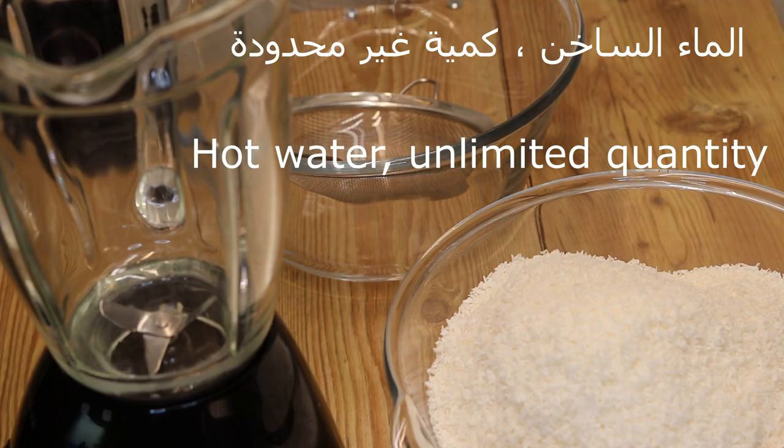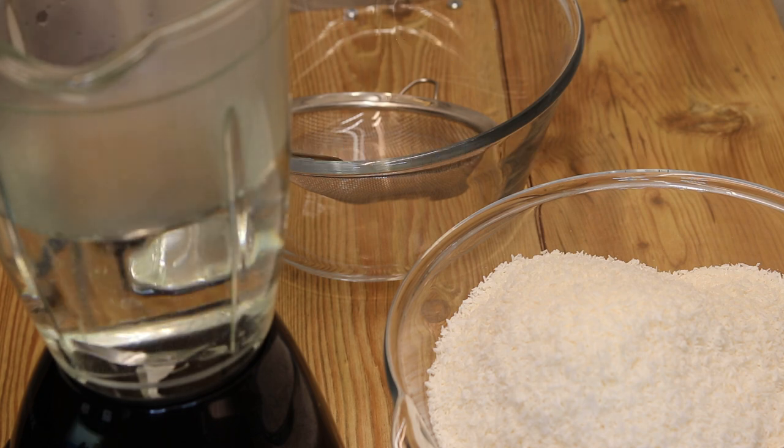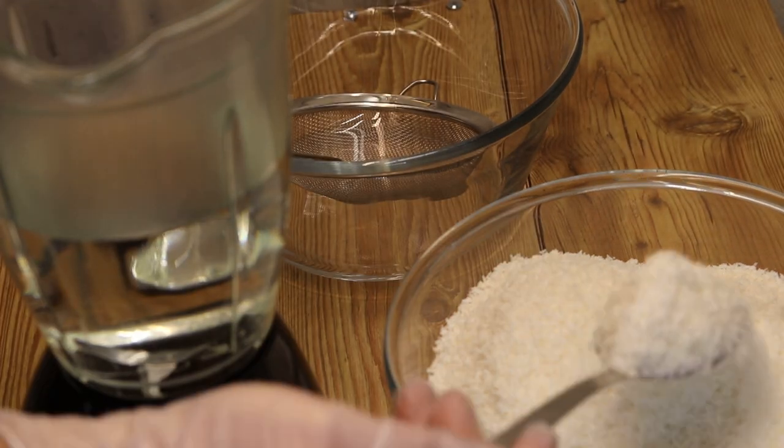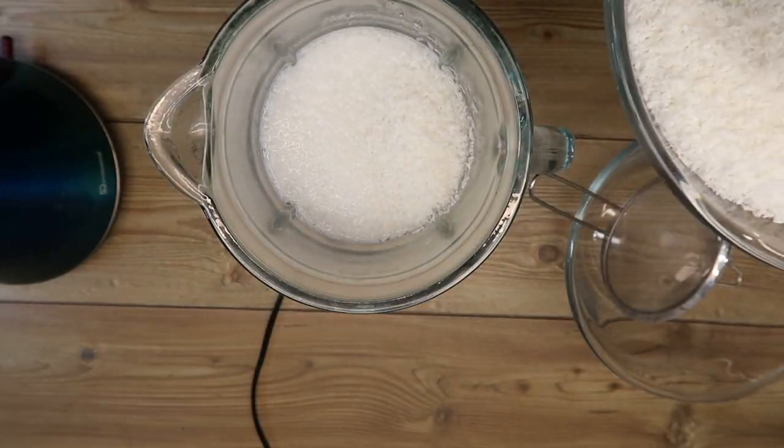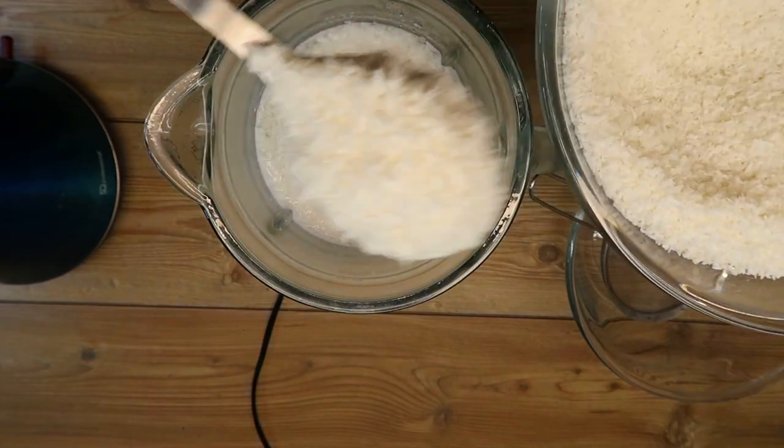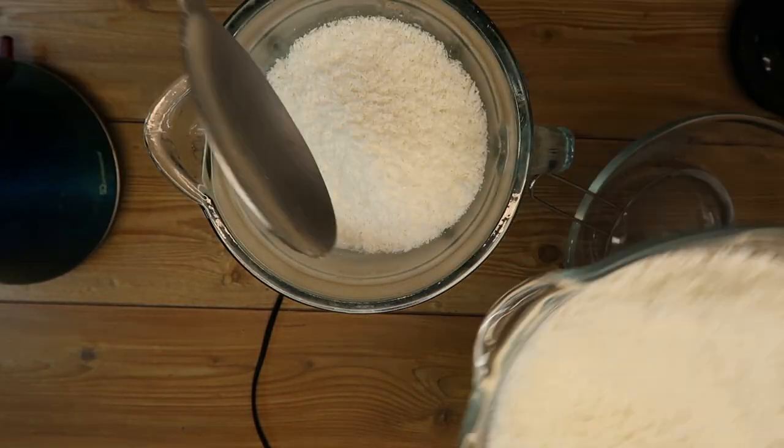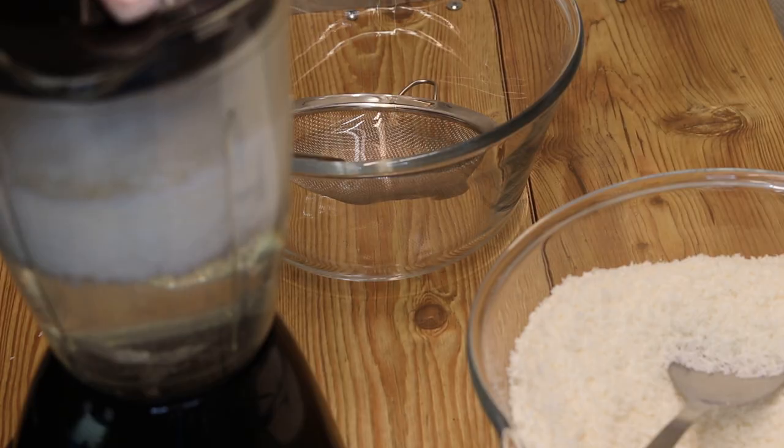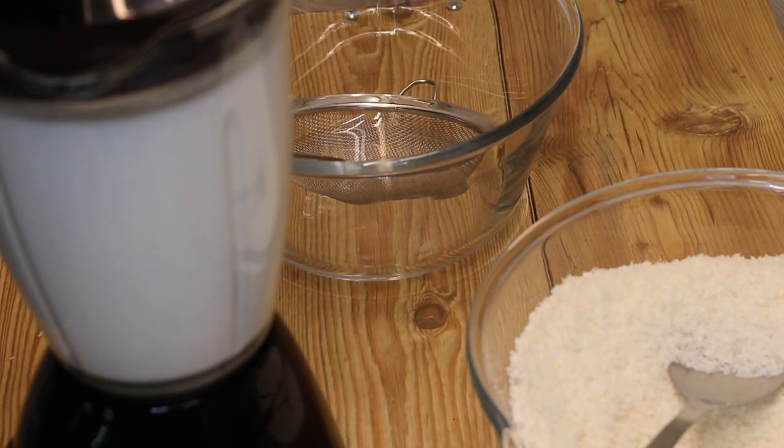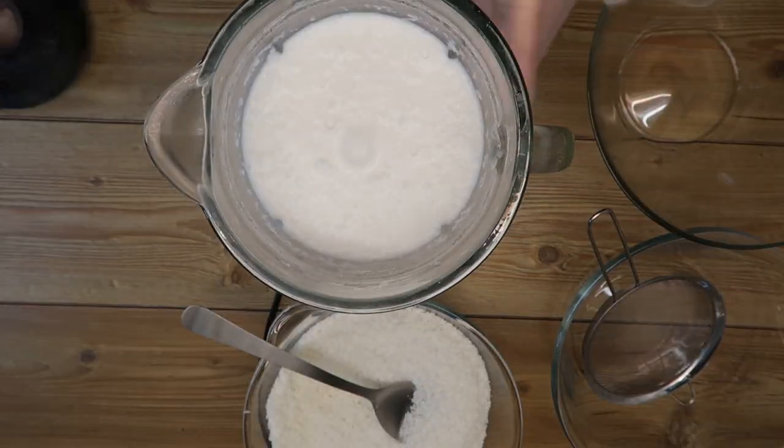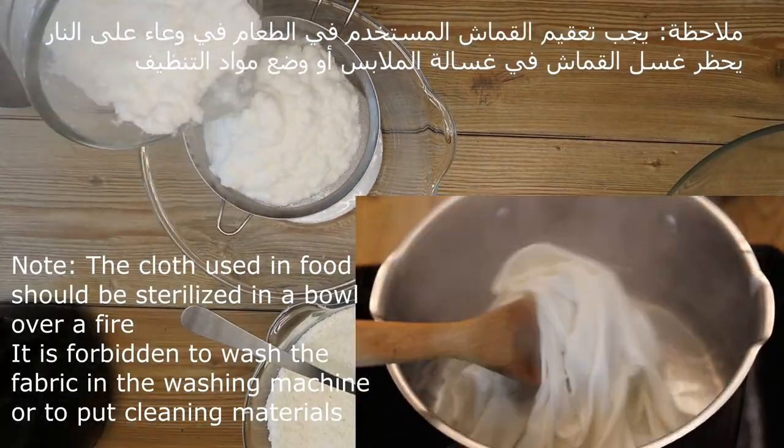جوز الهند. حليب جوز الهند. الماء الساخن كمية غير محدودة. يعني تقريبا ثلاثة كوب حسب كيف بتكون تركيزه. الماء ساخن تقريبا ثلاثة كوب وواحد كوب جوز الهند حسب التركيز. هيك أصبح جاهز.